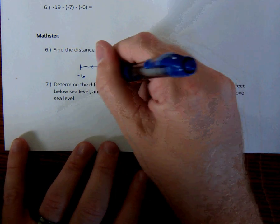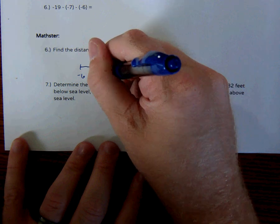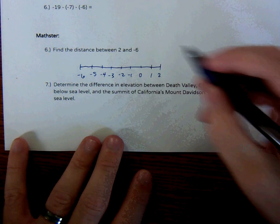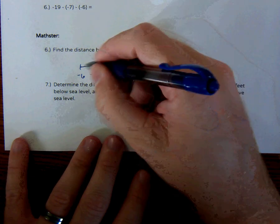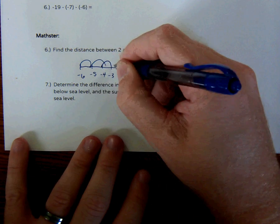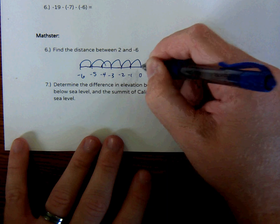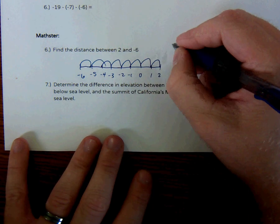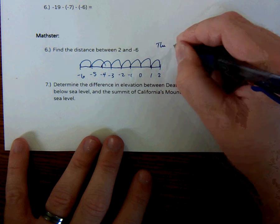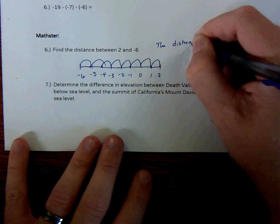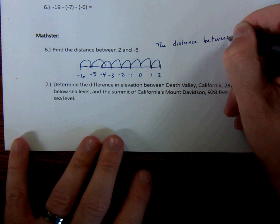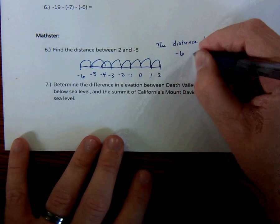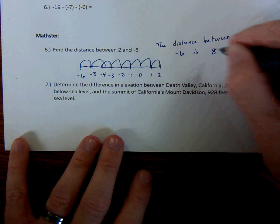If we were going to find the distance between these two numbers, we would just kind of count. So we have 1, 2, 3, 4, 5, 6, 7, 8. So the distance between 2 and negative 6 is 8.